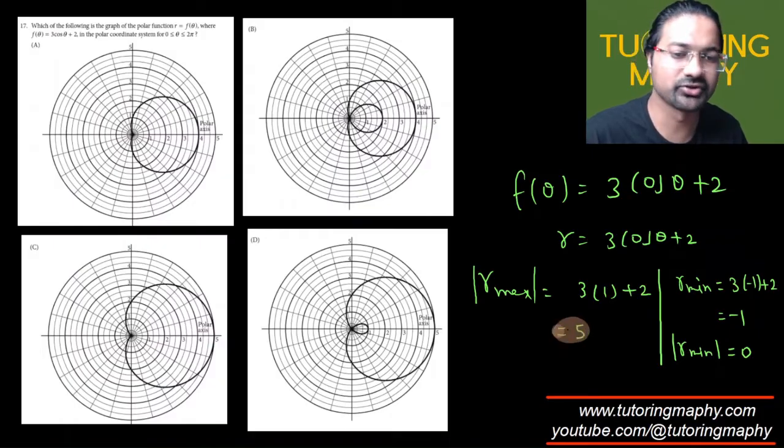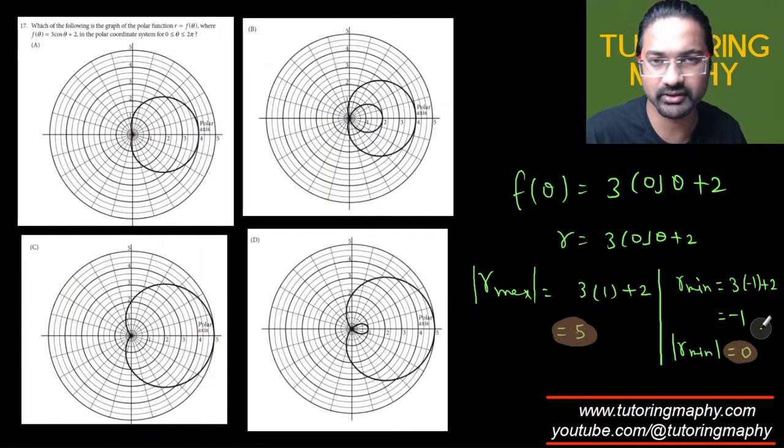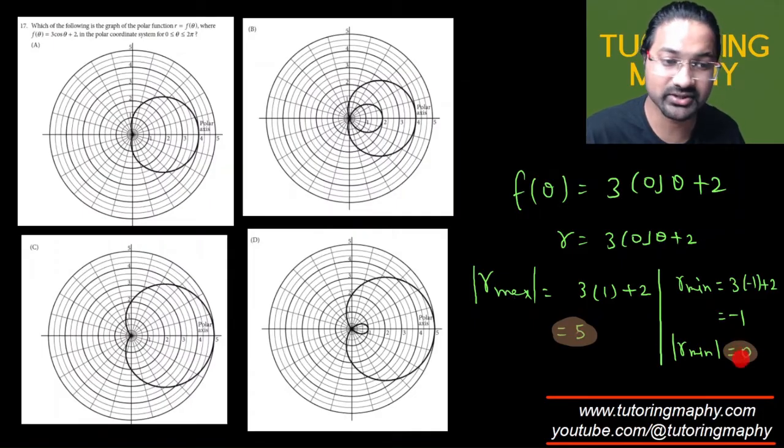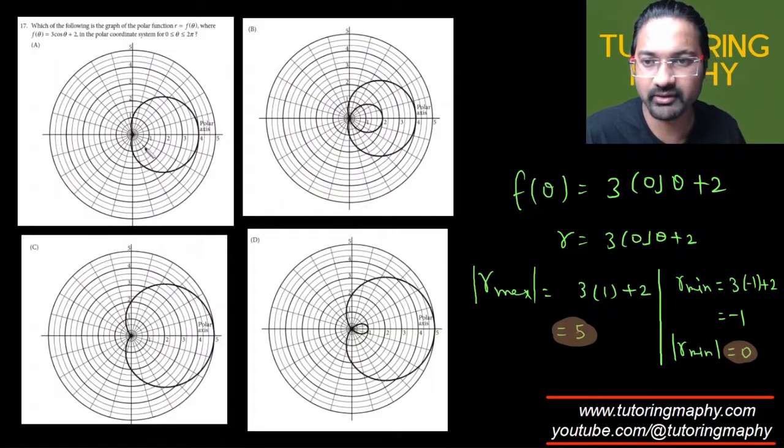Now if we know the minimum and maximum value of r, I know that my graph must cross the origin because at the pole the minimum value is just 0. Clearly all four of them are crossing the pole, so all four can be the answer with this information.